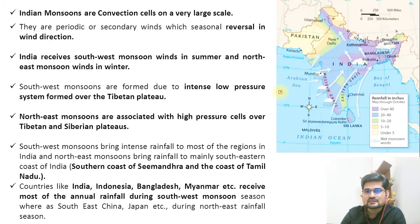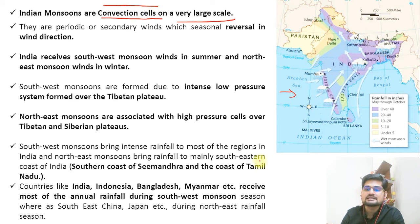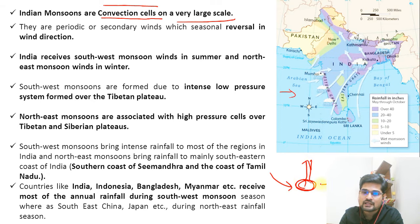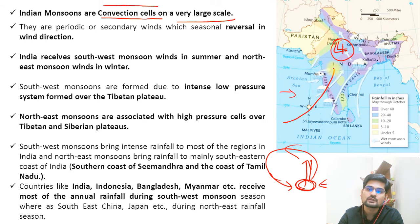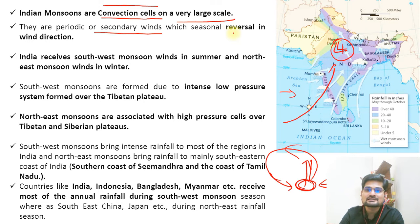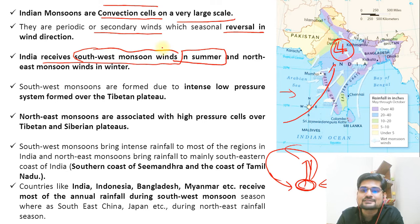Looking further at this diagram, the Indian monsoon can be understood as convectional cells on a very large scale. When we say convectional cell — hot air rises up, and the void is filled by cold air from the high-pressure area. So convection is occurring. Low pressure is on the land, high pressure is in the ocean, and the wind flows toward the land. They are periodic or secondary winds — a seasonal reversal. India receives southwest monsoon winds in summers, which is why our summer monsoon is also called the Southwest monsoon.